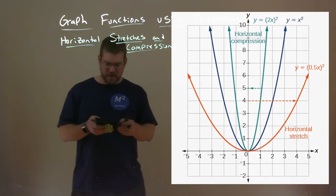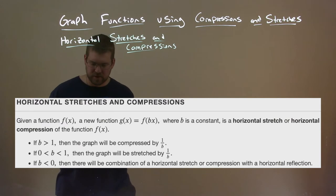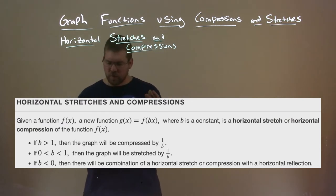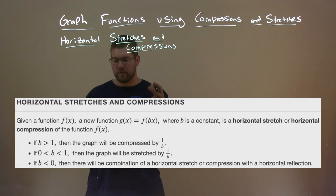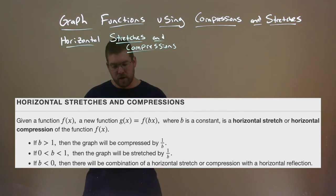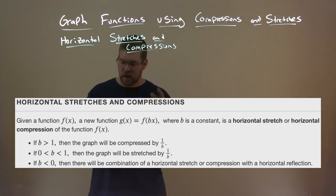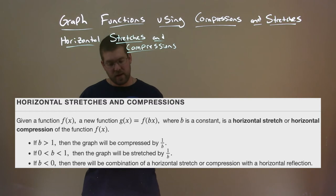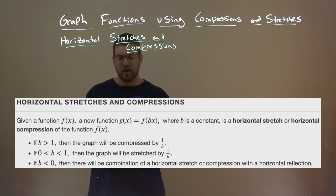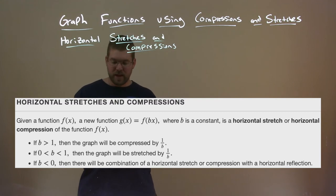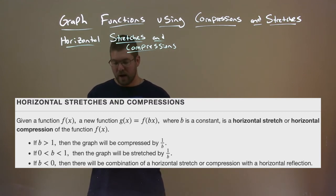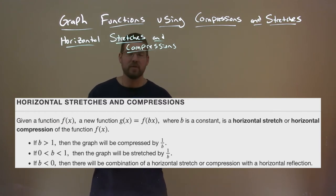Let's get to a definition. Horizontal stretches and compressions: given a function f of x, a new function g of x equals f of b times x, where b is a constant, is a horizontal stretch or horizontal compression of f of x. If b is greater than 1, the graph will be compressed by 1 over b. If b is less than 0, there will be a combination of a horizontal stretch or compression with a horizontal reflection.